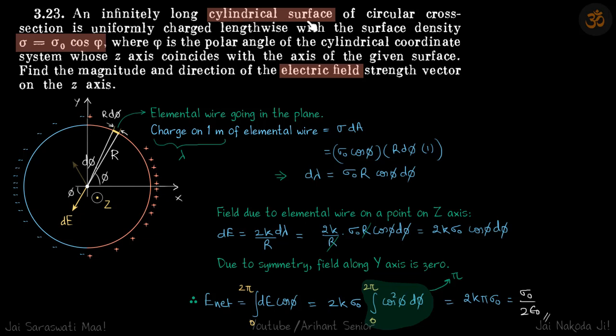We are given a cylindrical surface on which the surface charge density is varying as sigma naught cos phi. We need to find the electric field on the z axis.